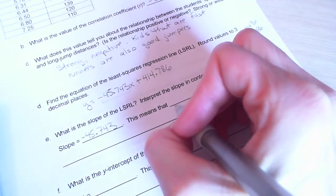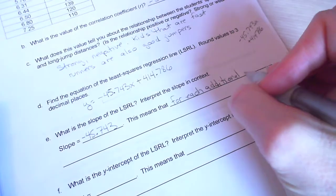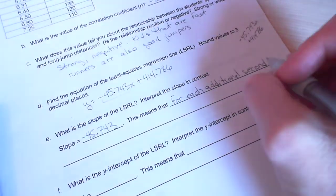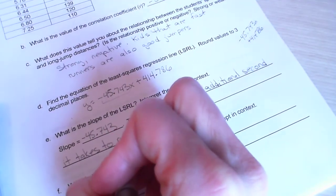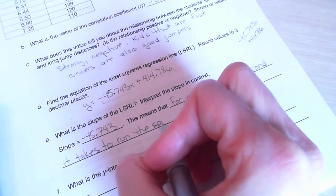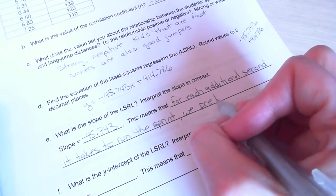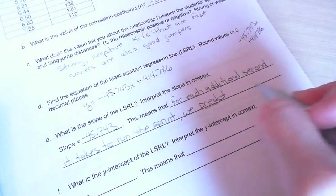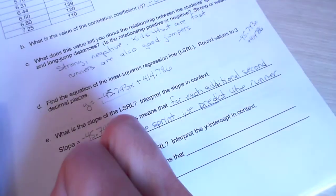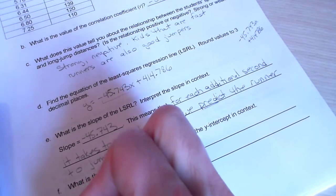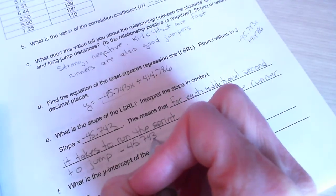So this means that for each additional second it takes to run the sprint. Those are my inputs, my explanatory variable. We predict. It's important to use the word predict because the least squared regression line gives you a prediction. We predict the runner to jump negative. Sounds weird to talk about a negative.